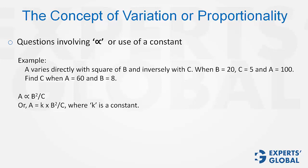Now, when B is equal to 20, C is equal to 5, A is equal to 100 is given. So, case 1 gives you this relationship. Through this, you can find the value of k turns out to be 5 by 4.